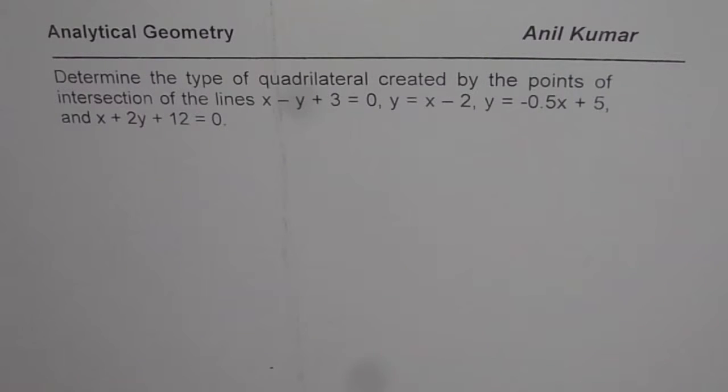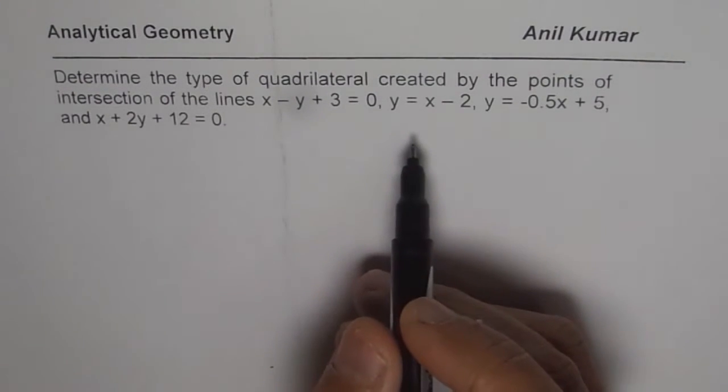determine the type of quadrilateral created by the points of intersection of the lines x minus y plus 3 equals 0, y equals x minus 2, y equals minus 0.5x plus 5, and x plus 2y plus 12 equals 0. Now we are given 4 different lines and they will intersect to form a quadrilateral.